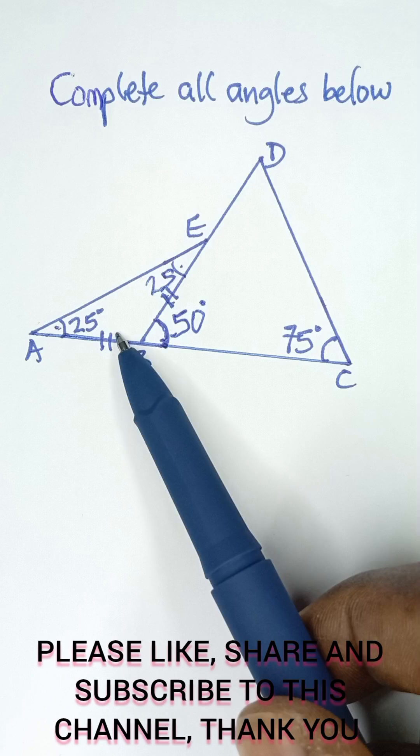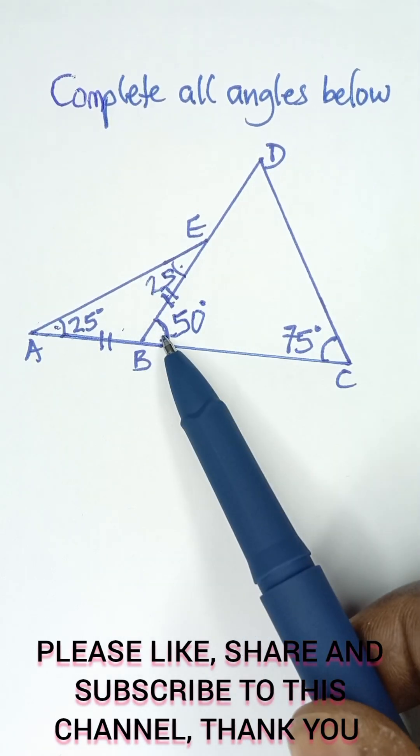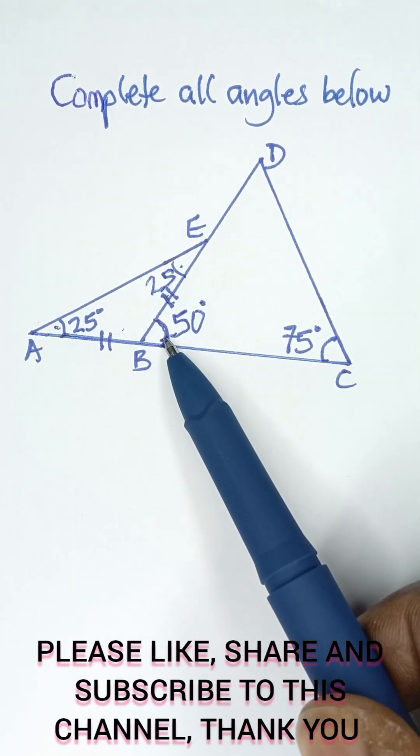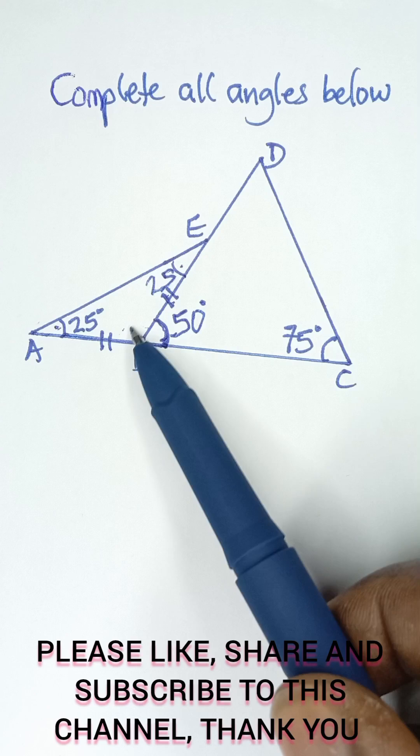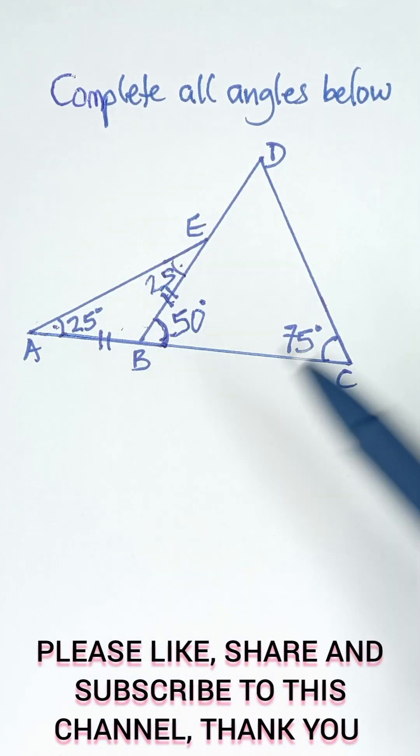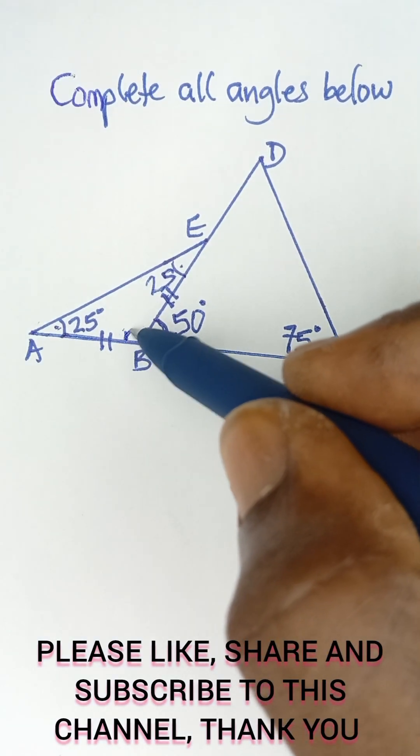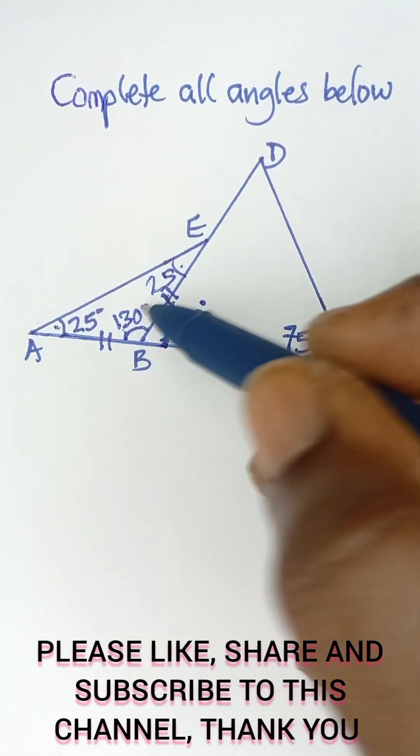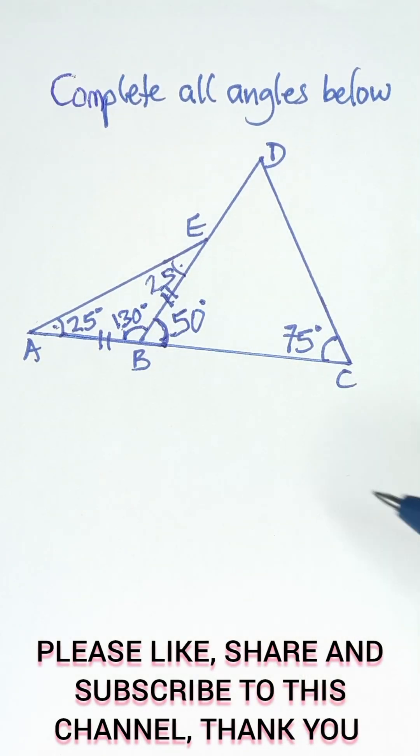Sum of angles on a straight line is 180. So if this is 50, then this angle will be 180 minus 50, which gives us 130 degrees.